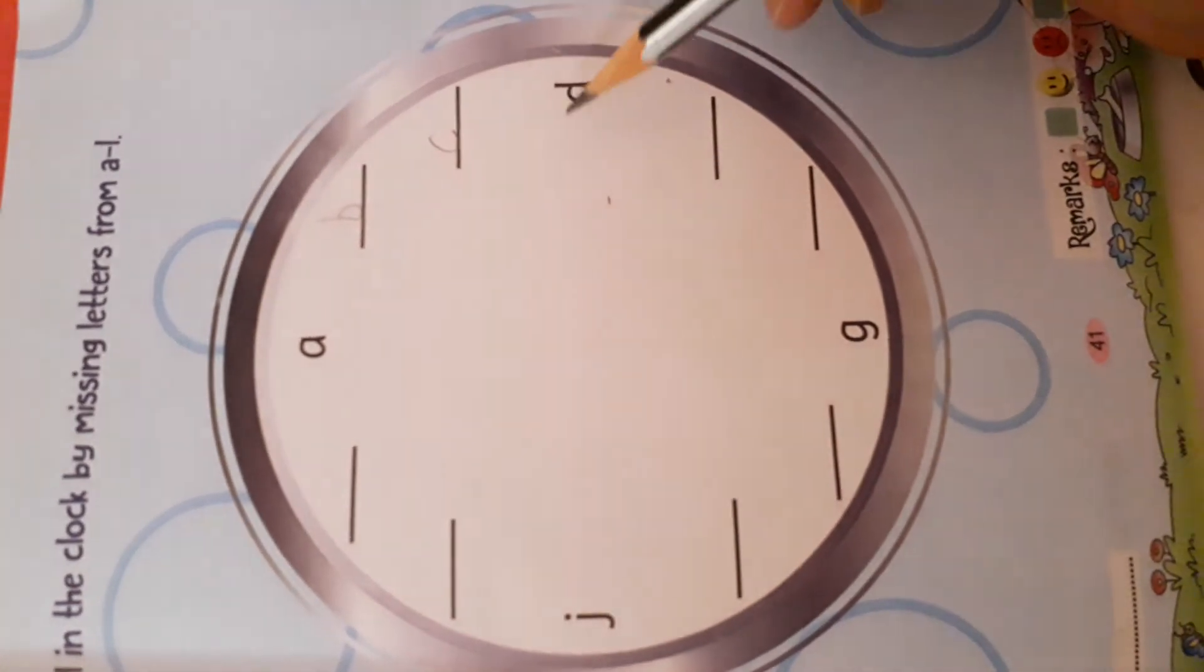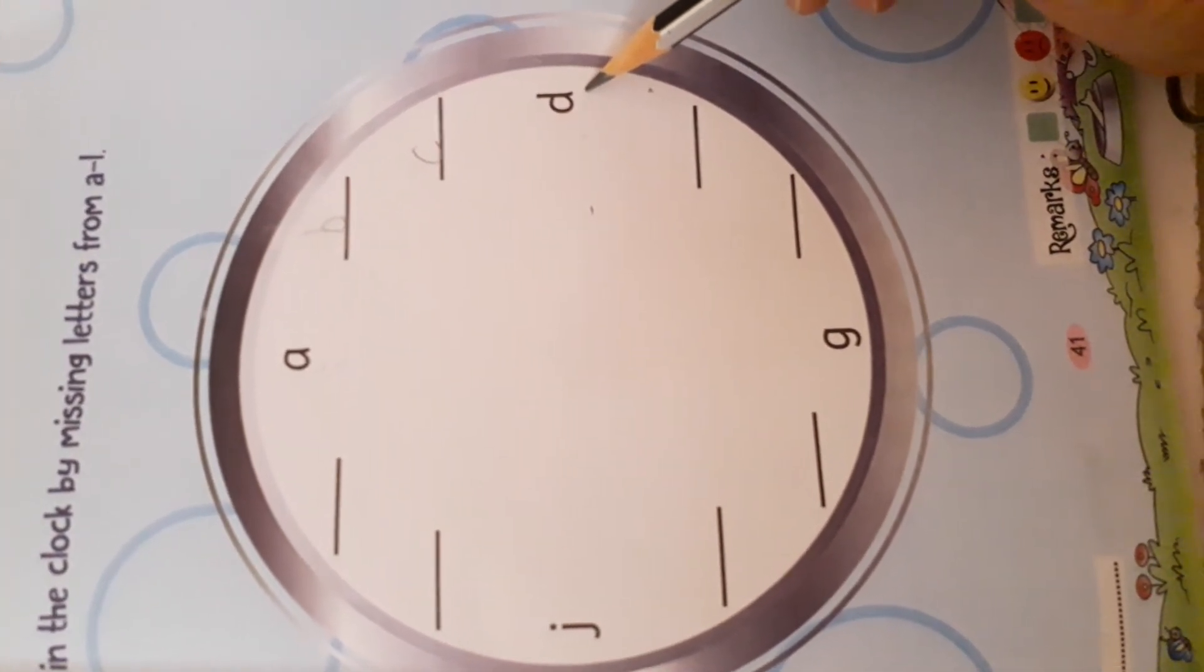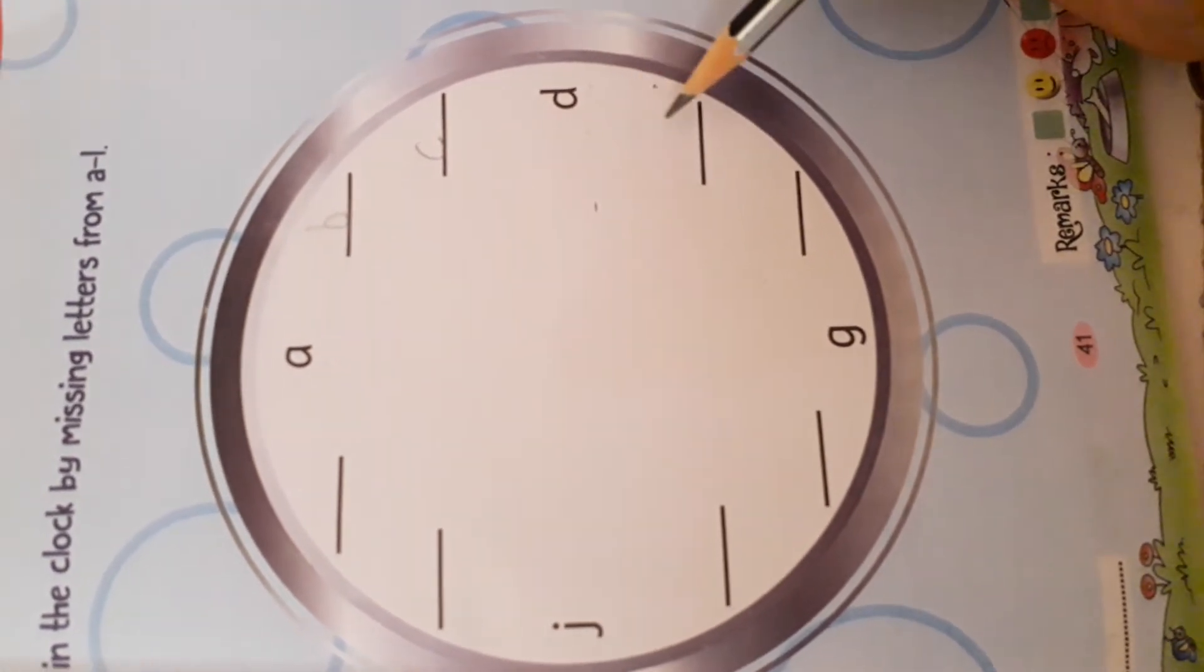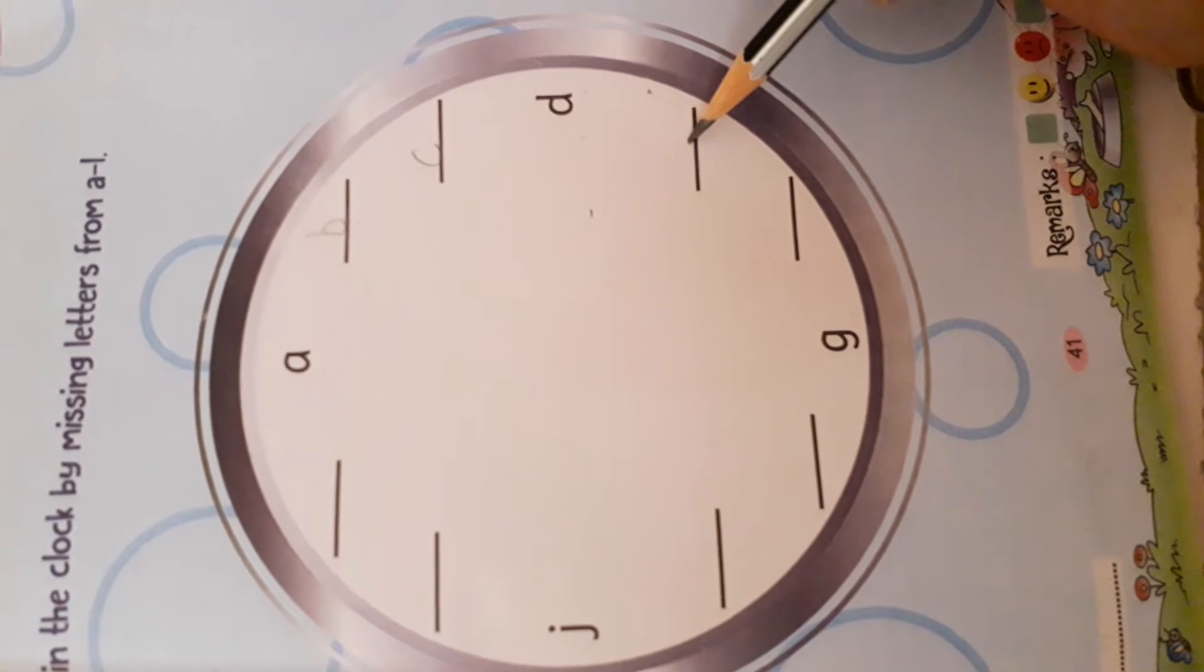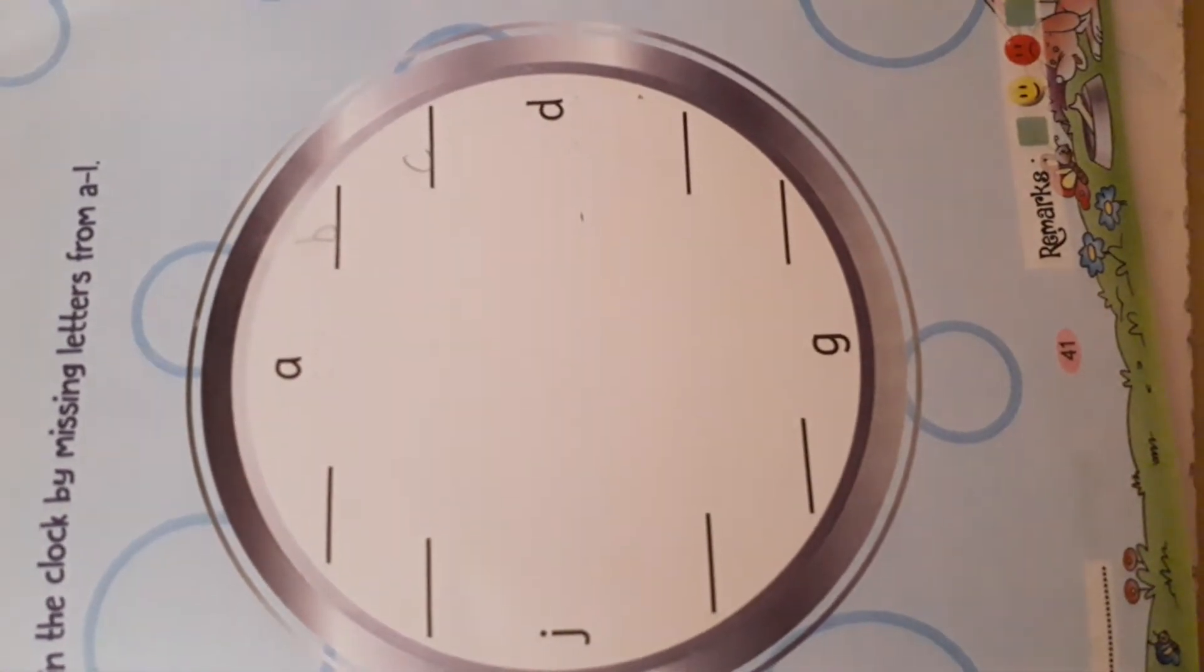Then after C, what is? What is this? D. D for? Dog. Then? Tell, tell. Yes. E for? Elephant.